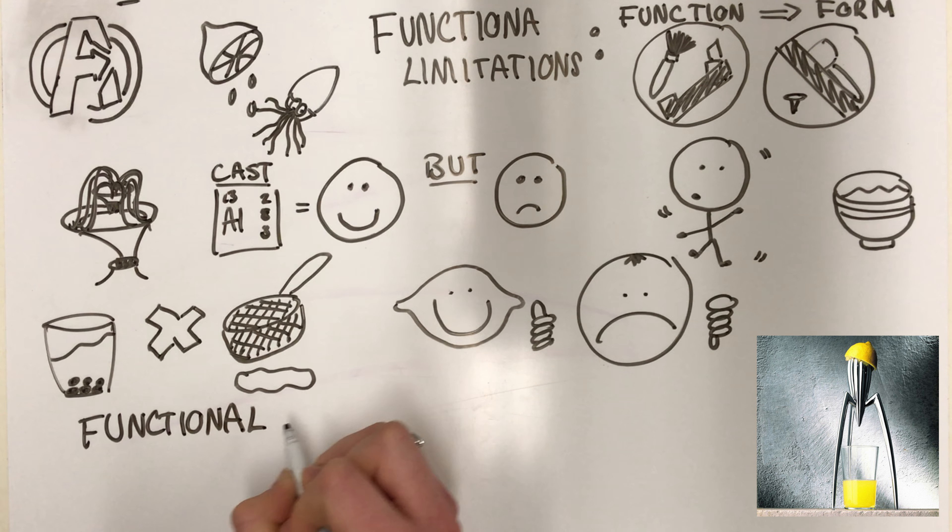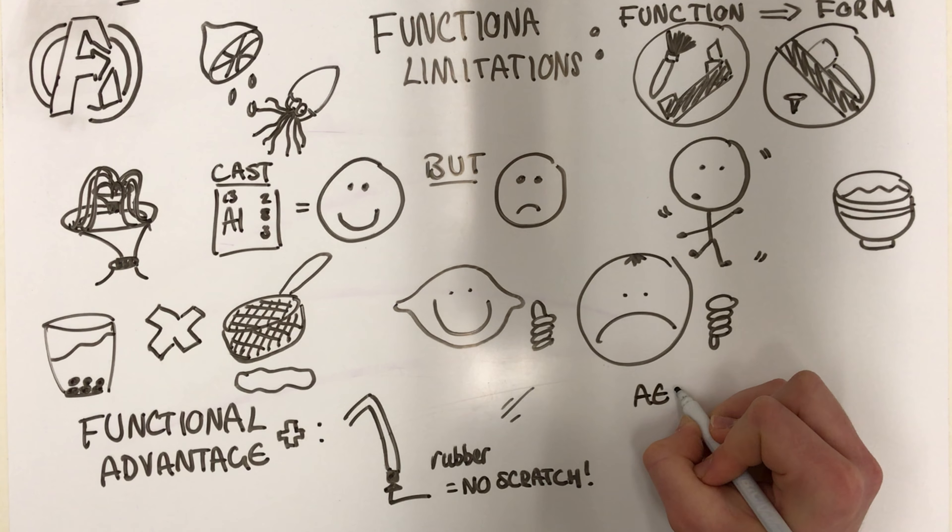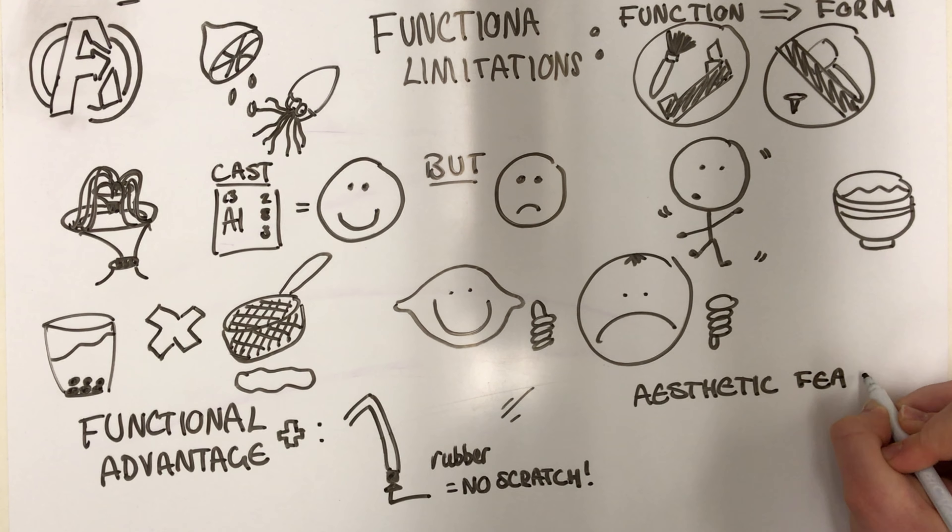The base of each leg has a rubber foot preventing scratches on surfaces. Aesthetic features. The shapes of the legs are on an upward angle, preventing the juice flowing down the legs due to gravity.